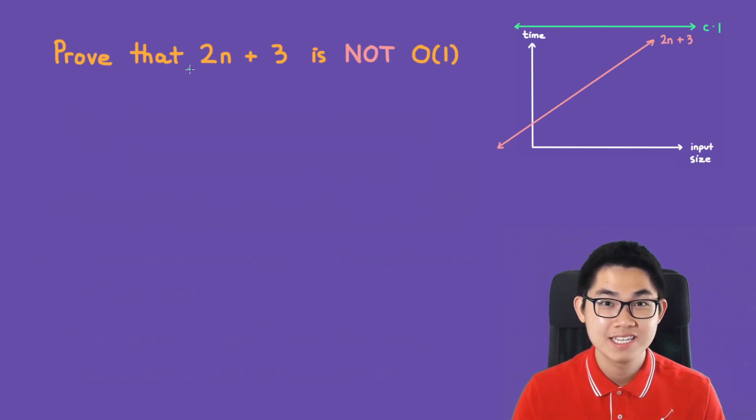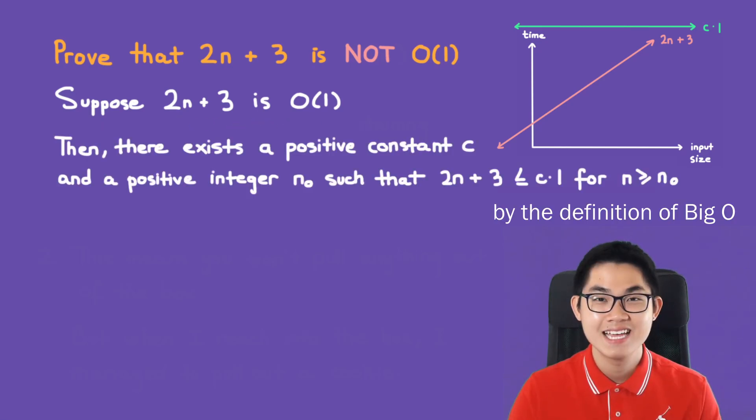Let's go ahead and prove this. So first step, suppose that 2n plus 3 is O(1). Then by definition, there exists a positive constant c and a positive integer n0 such that 2n plus 3 is less than or equal to c times 1 for all n greater or equal to n0.